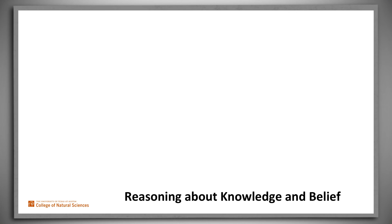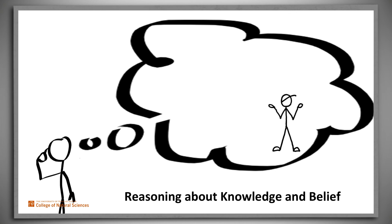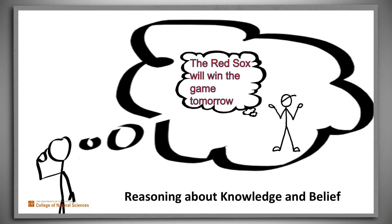Let's do one last example. Consider: 'Jesse thinks that Parker knows who will win the game tomorrow.' Reasoning about what other people know or believe is important. Unfortunately, it's not possible in a general and effective way to represent and reason with claims like this in first-order logic. But there are extensions of first-order logic that do support this.